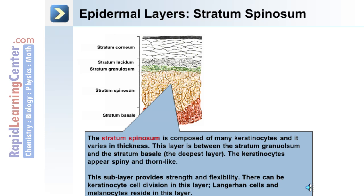There can be keratinocyte cell division within the stratum spinosum, and Langerhans cells and melanocytes reside in this layer.